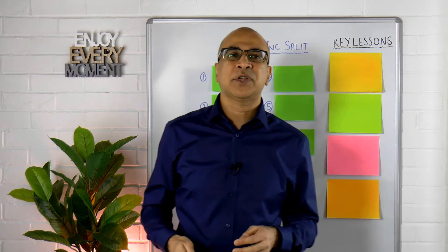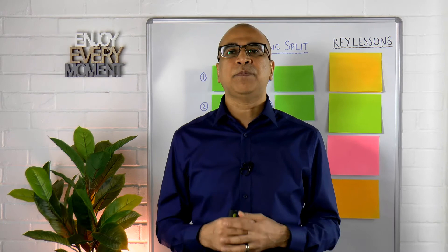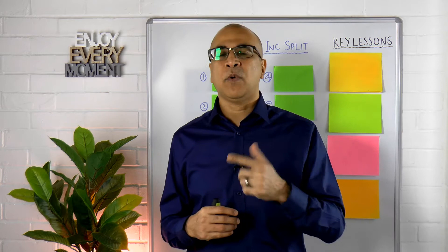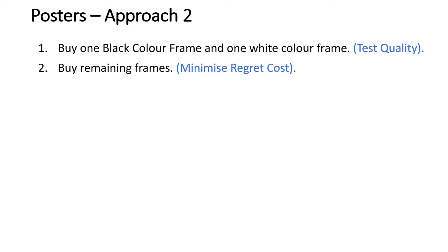Let's look at the approach I actually took. The first step was to select the frame — I had options between a black frame and a white frame, so I bought samples of both to test the quality in terms of how they looked in the space where they'd be set up. Once I selected one, I then bought the remaining frames. The reason was to minimize the regret cost — I didn't want to invest a whole bunch of money on frames that were never used.